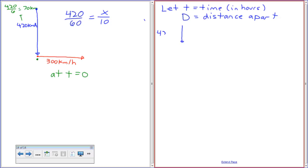It's heading down in that direction, but the other airplane is going this way. This is going to be 300t going this way. Now, you had it exactly right. You have to include the initial distance, so it's going to be 70 minus 420t.